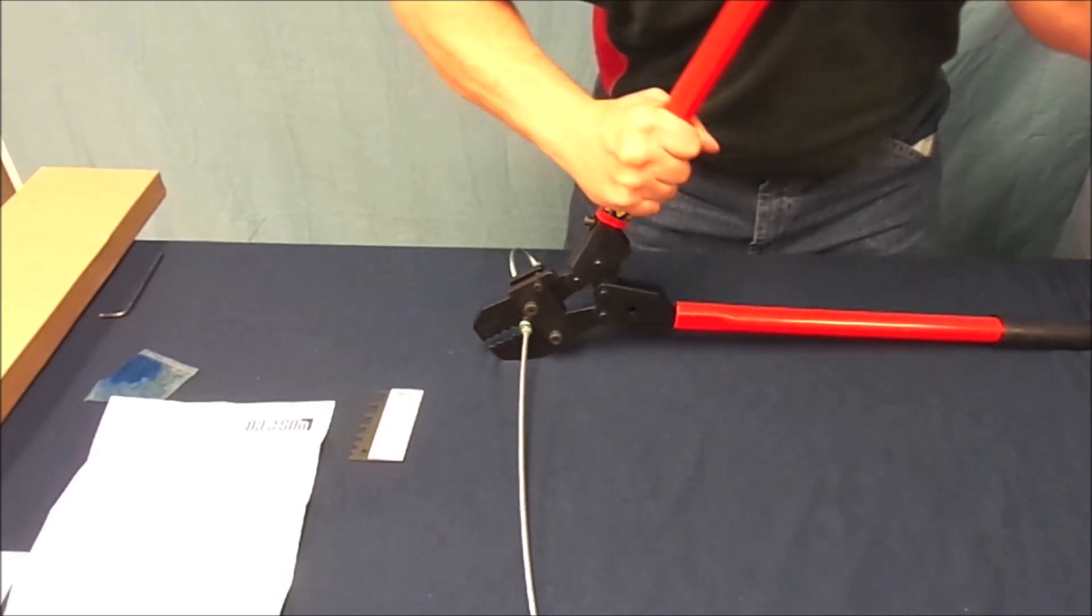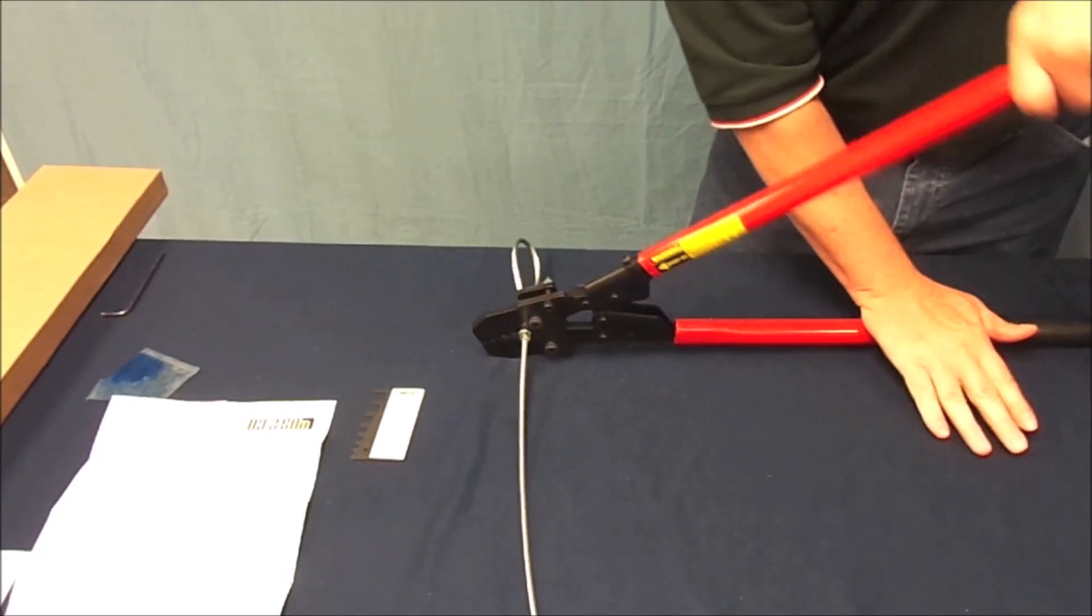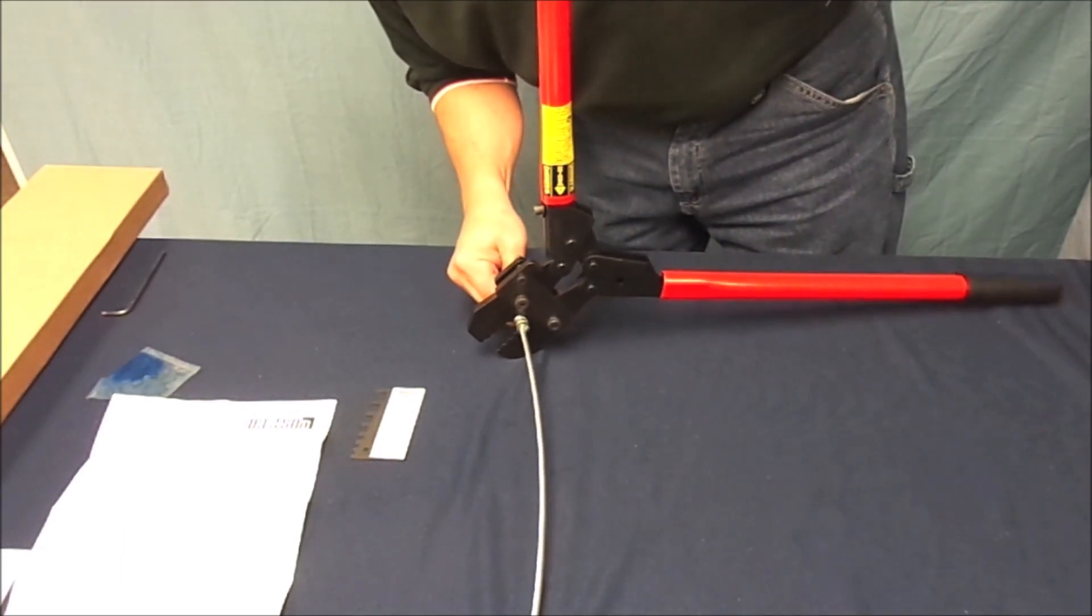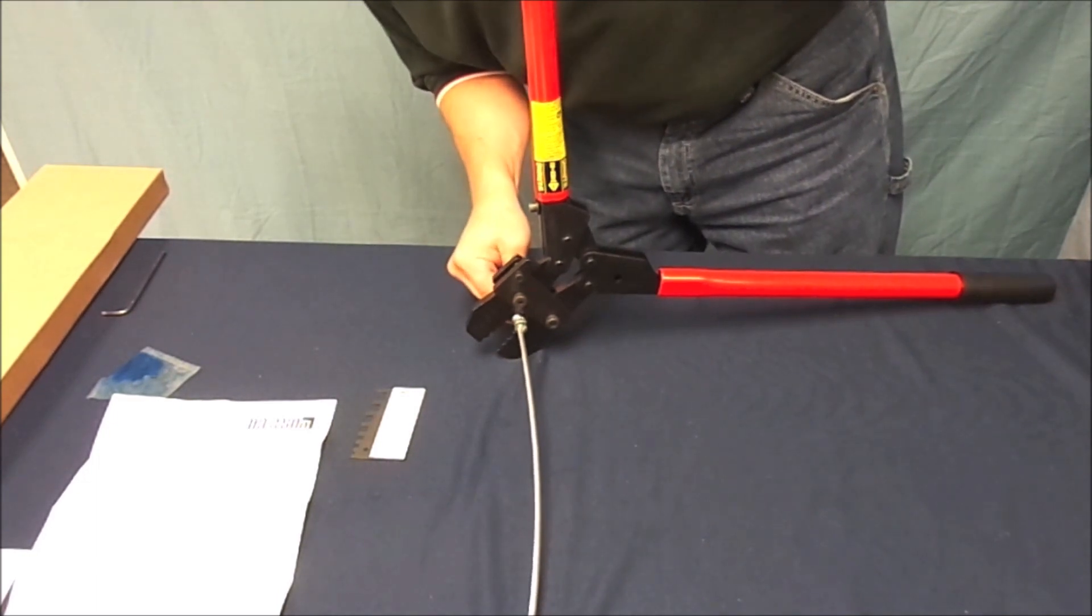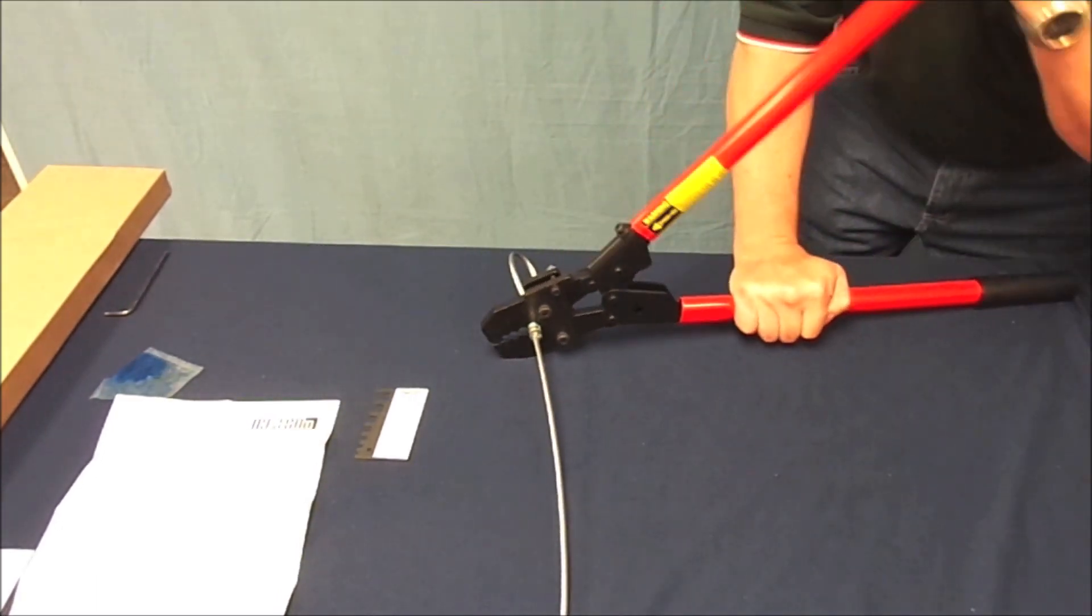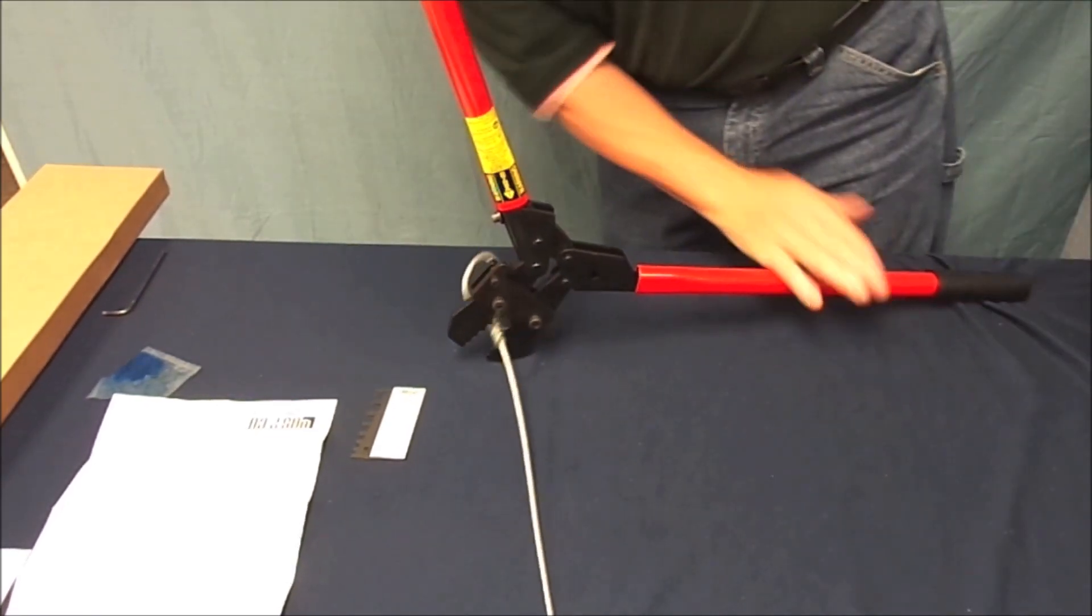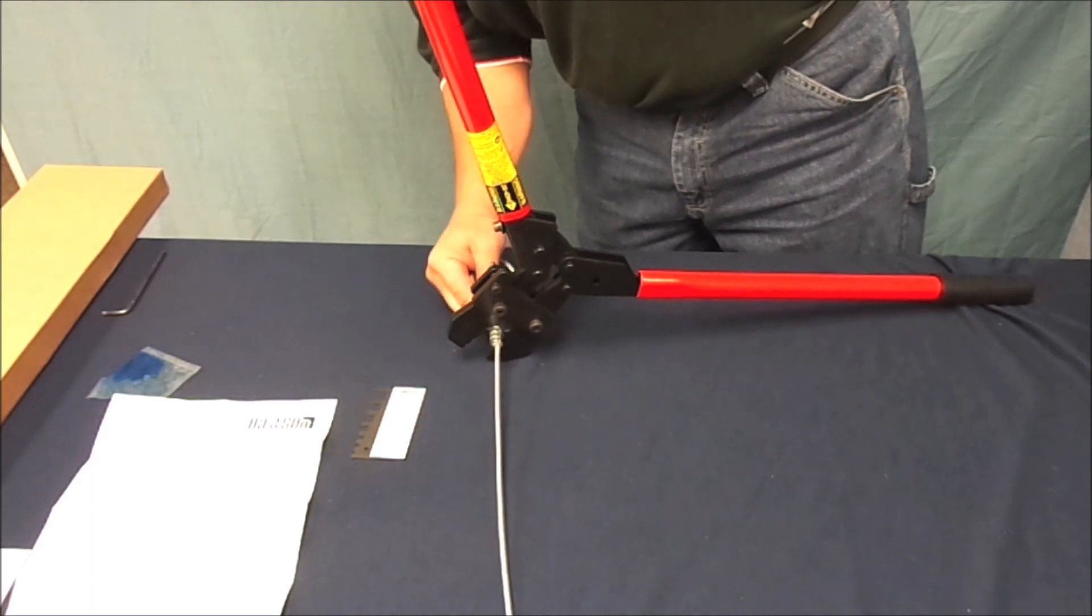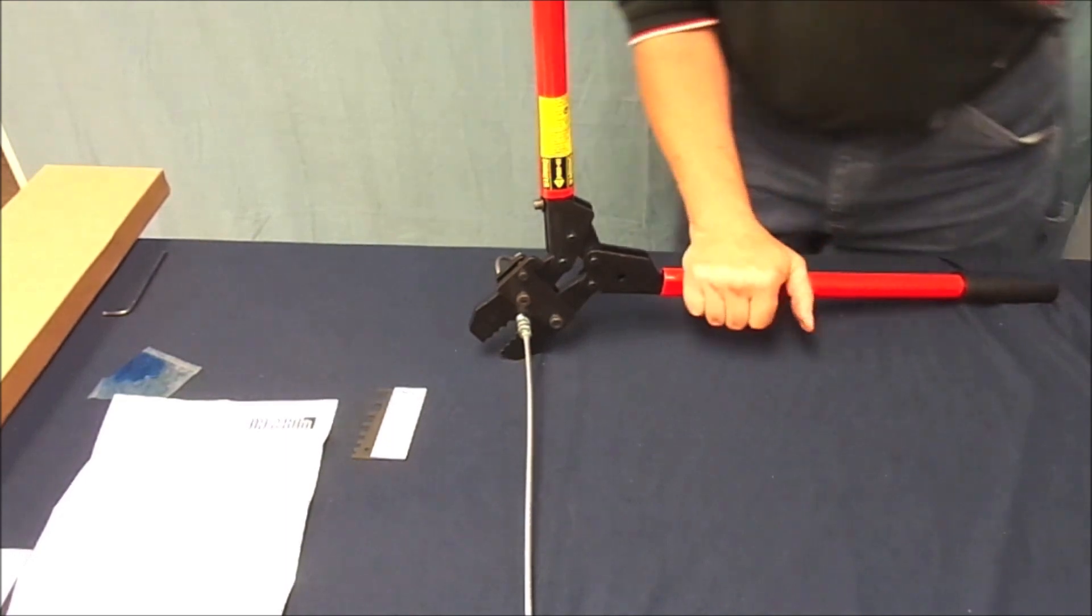Since this is a 3-16th diameter cable the instructions dictate that four compressions need to be made to complete this attachment. Continue by making the next three compressions over the length of the fitting working your way towards the loop. After each compression rotate the loop 180 degrees to keep the sleeve from bending. The compression should be spaced evenly over the entire length of the fitting.